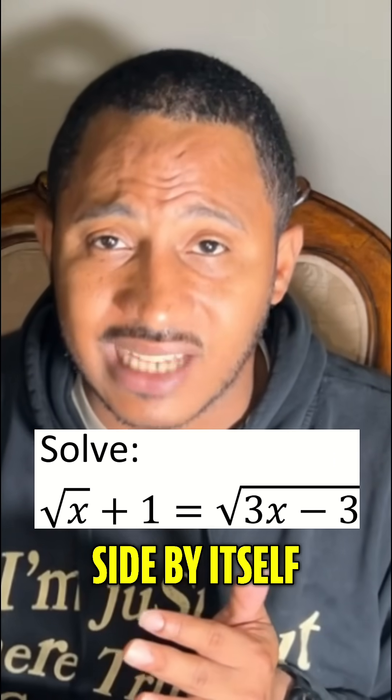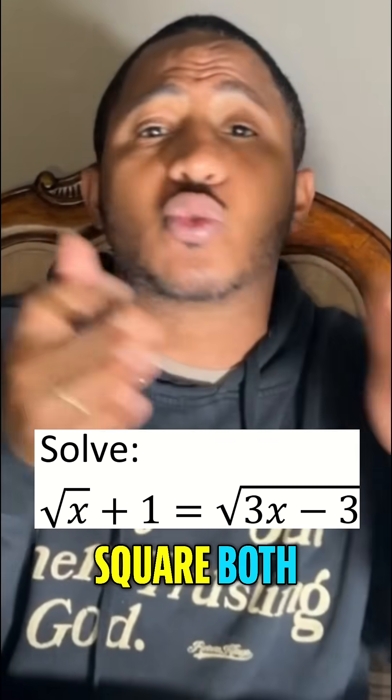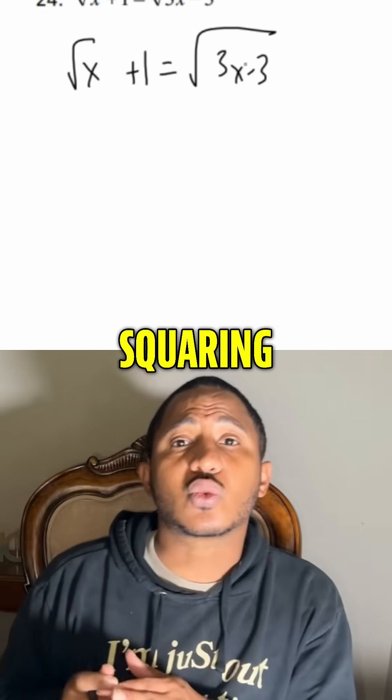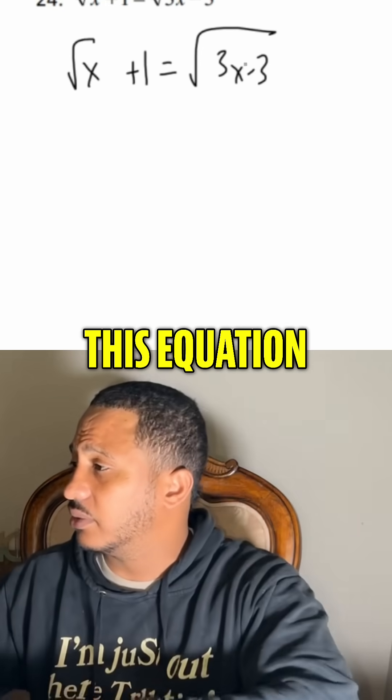Luckily we have a radical already on the side by itself. So then we square both sides of that equation — squaring both sides of this equation.